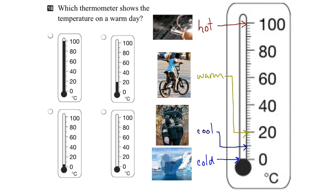So if we look at our options: the first option is the hot option at 100 degrees; the second option is probably the cool option; and this one is the cold option at zero. So our warm one is right here — 20 degrees. A nice warm day.